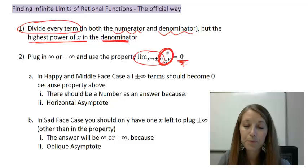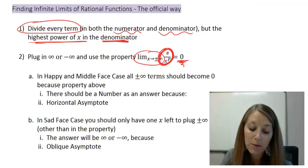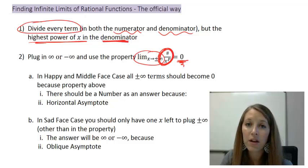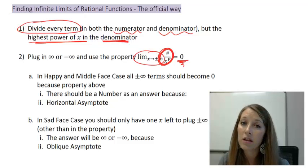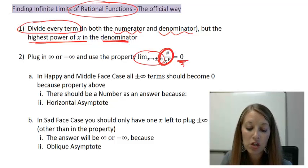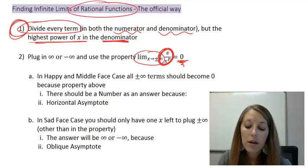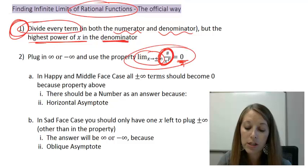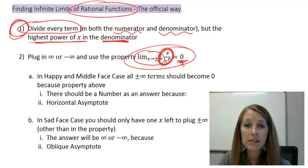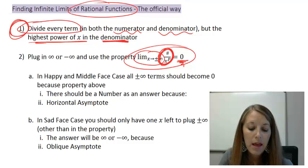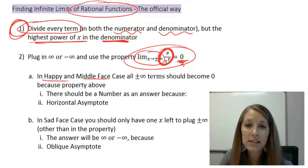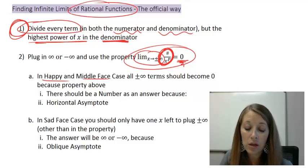If we plug in positive or negative infinity, those pieces are going to approach zero. So when I introduced infinite limits, I told you not to plug in positive or negative infinity — we actually do that, but only in rational functions and only after we divide every term by the highest power of x in the denominator. Most of our terms are going to be disappearing, and what we're going to have left depends on which face case we're in. In happy and middle face case, pretty much all the terms are going to be zero with a few exceptions.